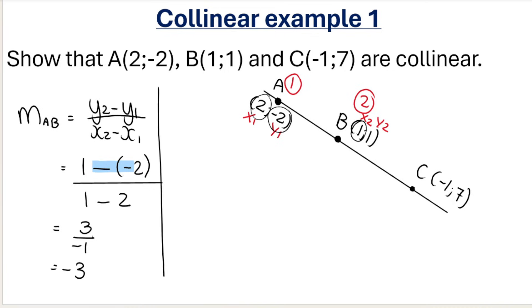I then need to compare that gradient to another pair. So I did A and B. Let's do B and C. You could do A and C as well. Now I'm going to switch it up: I'll call B coordinate number one (X1 and Y1), and C would be coordinate number two (X2 and Y2). Then we simply substitute.